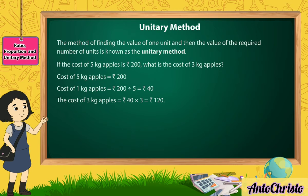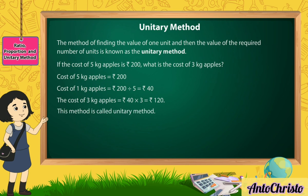Therefore, the cost of 3 kg apples is equal to Rs 40 multiplied by 3, which is equal to Rs 120. This method is called the Unitary Method.